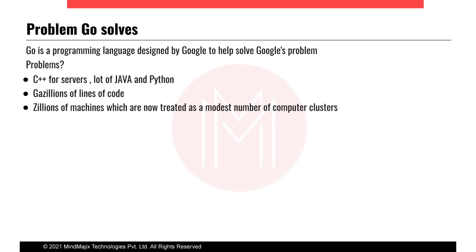Java runs on a JVM machine, which itself occupies a huge amount of memory, and then you put a Java code on top of it — these were complex problems they were trying to solve. Go comes in to solve all those problems. They wanted to build a language as fast as C but as easy to write as modern programming languages, and hence the Go programming language was born.